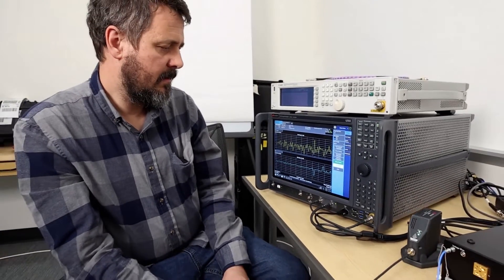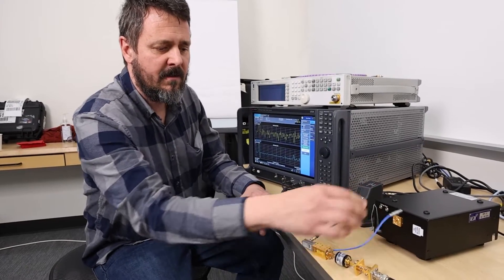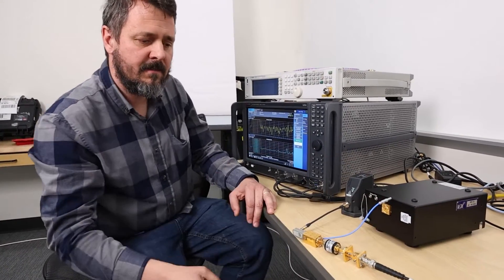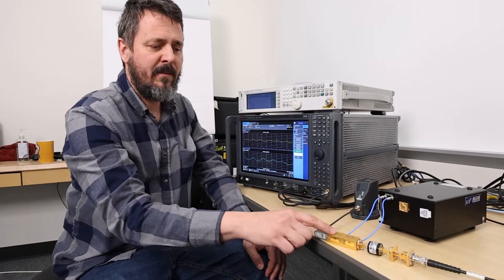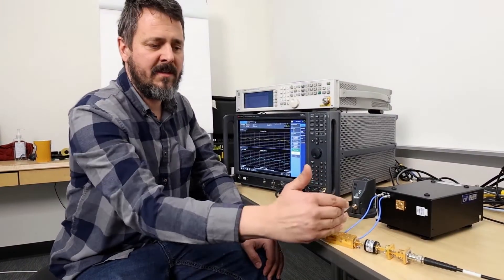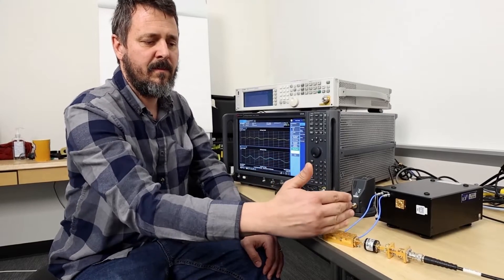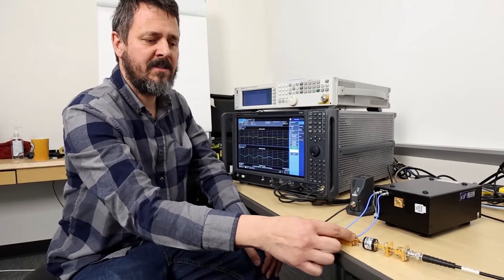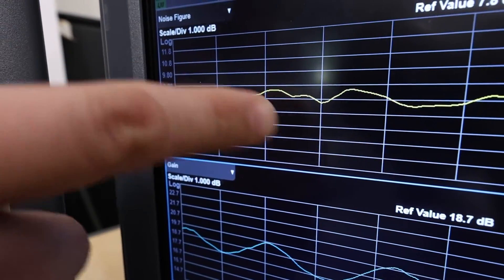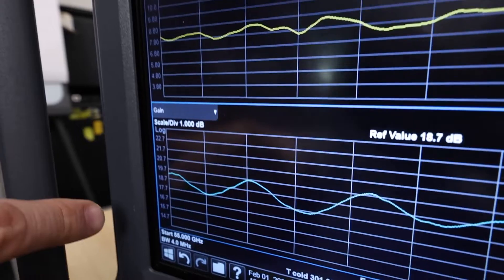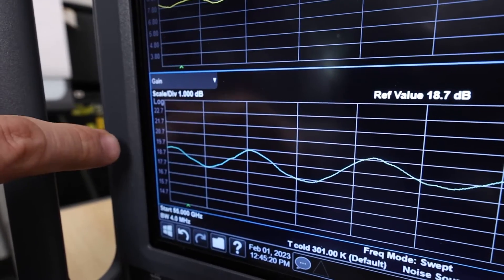And then now I'm going to power off my amplifier and I'm going to add in the DUT. So I've added my amplifier, powered it on, powered back on my pre-amplifier. Remember this is our system plane of reference. So now I'm measuring the noise figure of this amplifier and I'm getting about 8 dB noise figure, about 19 dB of gain.